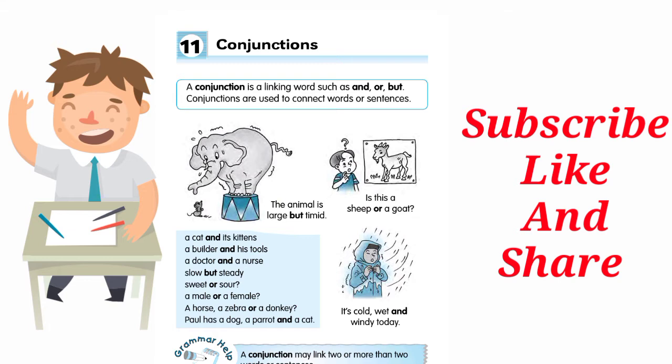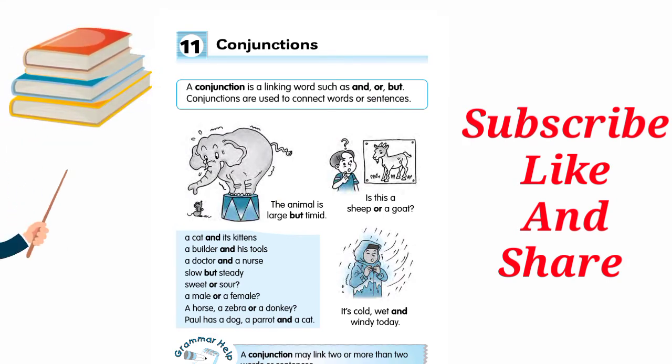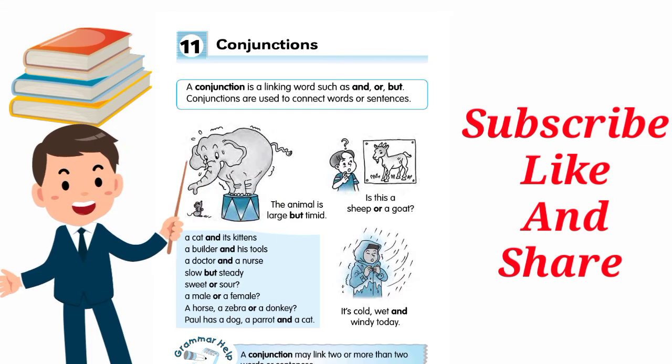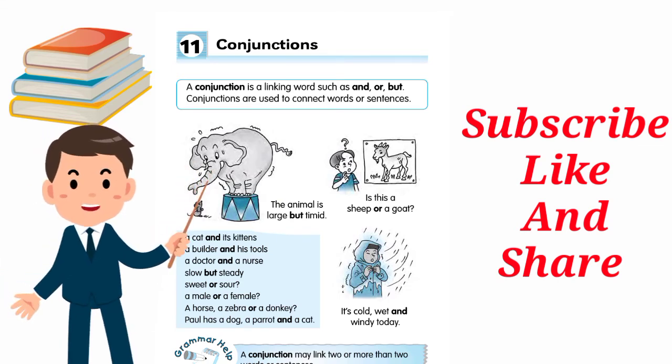For example: the animal is large but timid. Is this a sheep or a goat? A cat and its kitten. A builder and his tool. A doctor and a nurse.